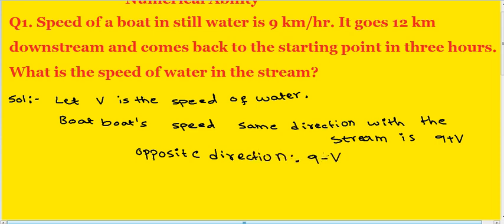In the opposite direction, the boat's speed in water is 9 minus v. So: same direction gives 9 plus v, and opposite direction gives 9 minus v.